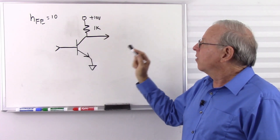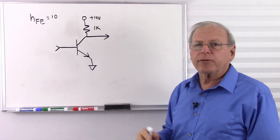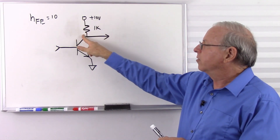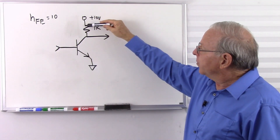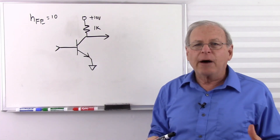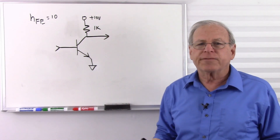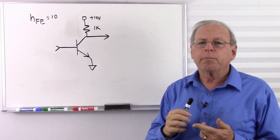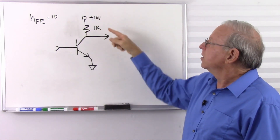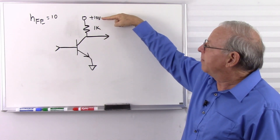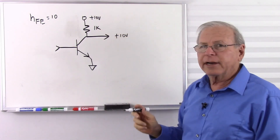There's a 1k collector resistor. Right now, with no current into the base, I expect no current flowing through the collector — no current flowing through this resistor. The transistor is acting like an open switch. With no current flowing through the collector resistor, there's no voltage difference across it, so the voltage at the collector must be the same as the supply. So right now we have positive 10 volts on the collector.